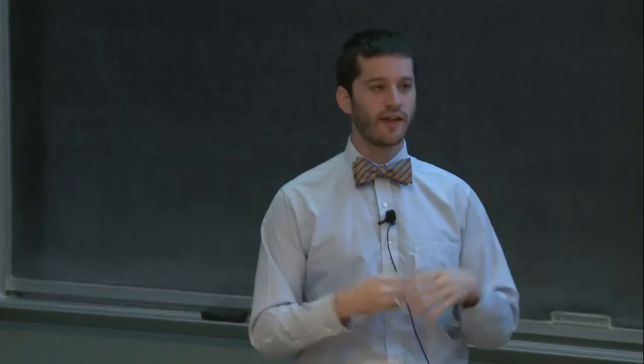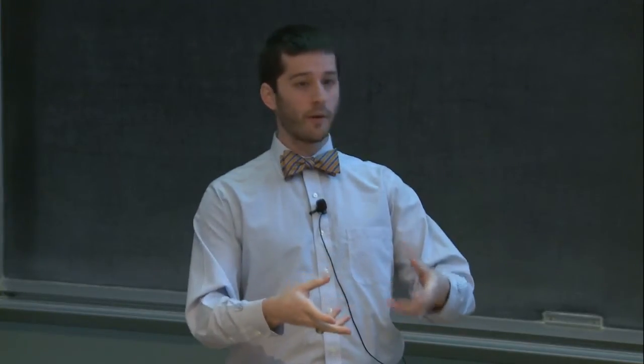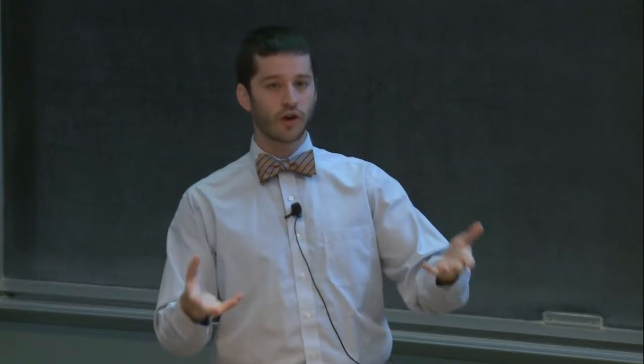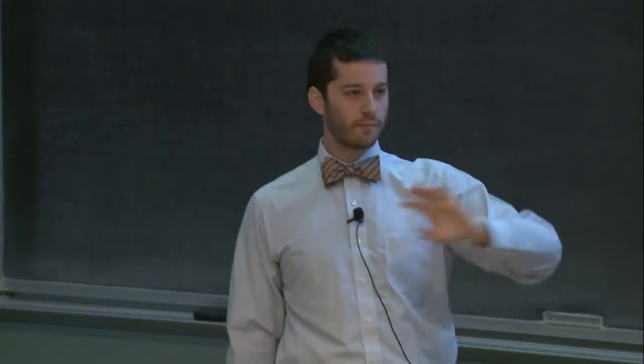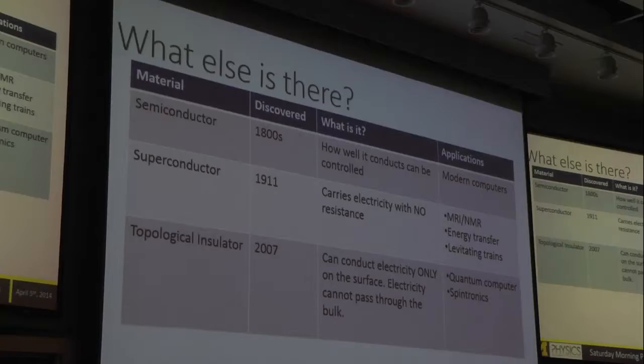One very common application of superconductors is making really powerful magnets, used in medicine for MRIs and NMRs. There are also attempts to use these for energy transfer — in some power plants they have superconducting lines to move energy without losing a lot to heat. Another application is levitating trains: superconductors have a fascinating magnetic property that allows them to hover over a permanent magnet and be pushed along a track with very low resistance.